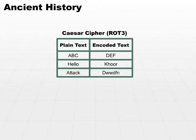Now, the reason it's called a rotate3 cipher is what happens if you end up with the last three characters of the alphabet. In other words, what if you have a Z? Well, you just rotate back around. So Z would then become a C, because we have Z next to be A, then B, then C. So it rotates all the way around.